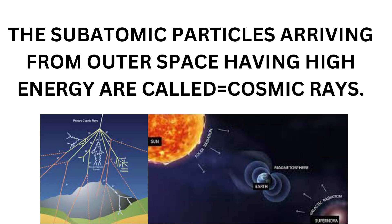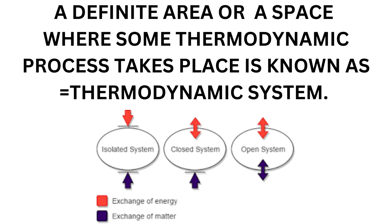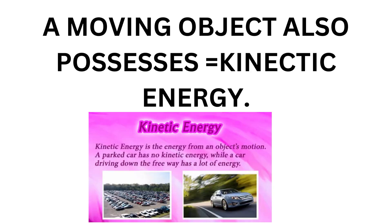Subatomic particles arriving from outer space having the highest energy are called cosmic rays. A definite area or space where some thermodynamic process takes place is known as a thermodynamic system. There are different types: isolated system, closed system, and open system. A moving object also possesses kinetic energy. There are two types: potential energy and kinetic energy — kinetic energy is possessed by any object which is in motion.